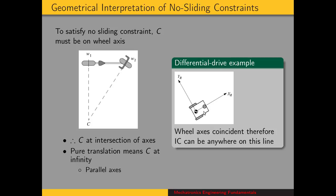Another wheel configuration is the differential drive robot. Here the wheel axes are coincident, so the instant center is anywhere on that line. The distance from the robot origin along that line to the instant center is determined by the wheel speeds — specifically by the velocity of the origin in the x direction and the angular velocity. The velocity of the origin in the y direction is always zero because velocity is perpendicular to the wheel axis, which is the y axis in this case.